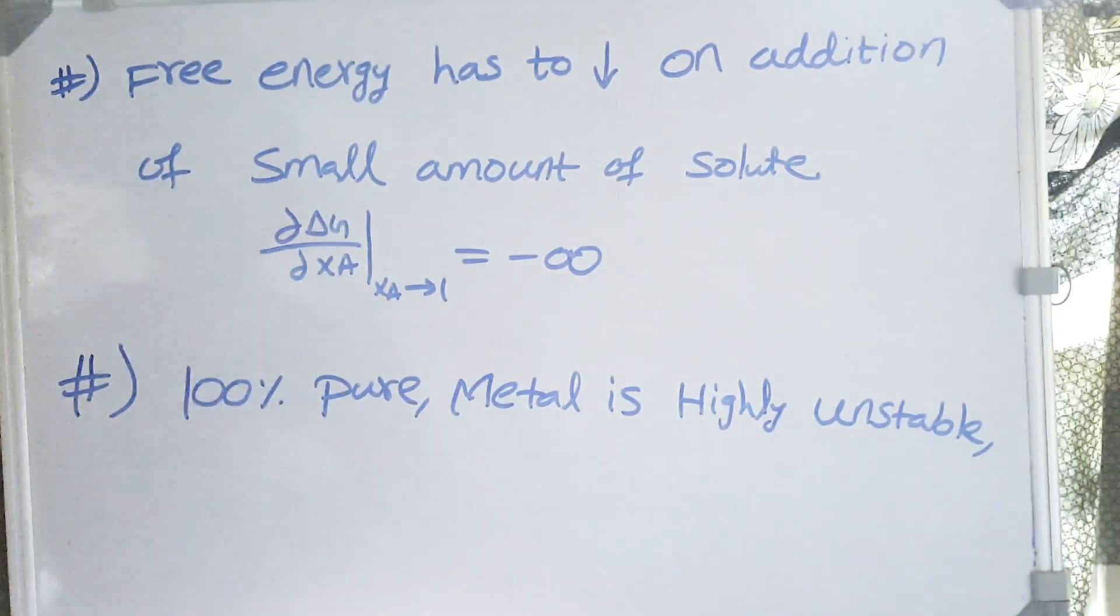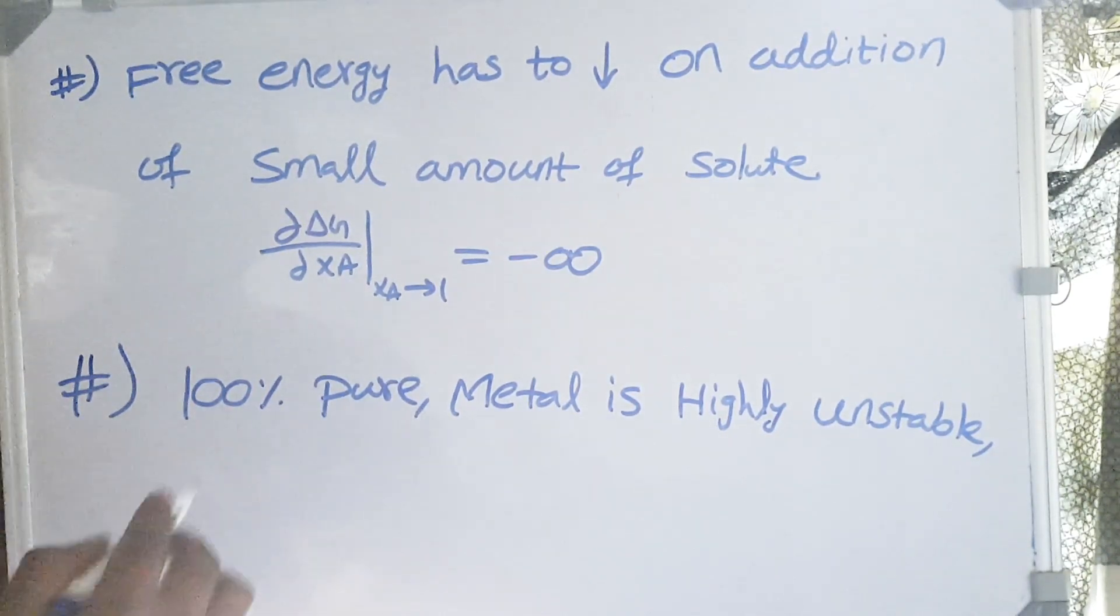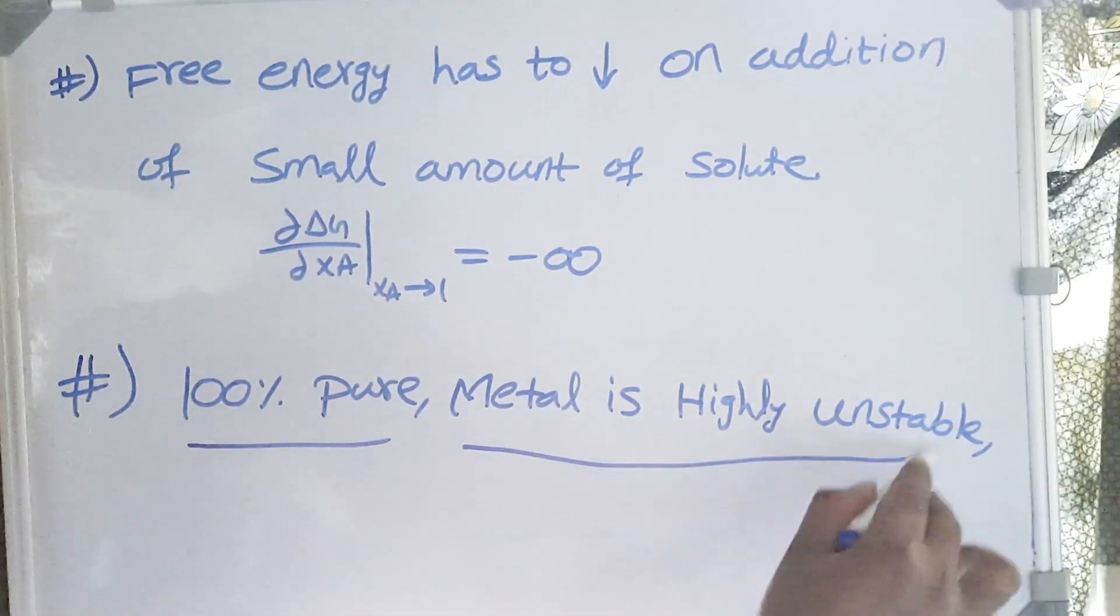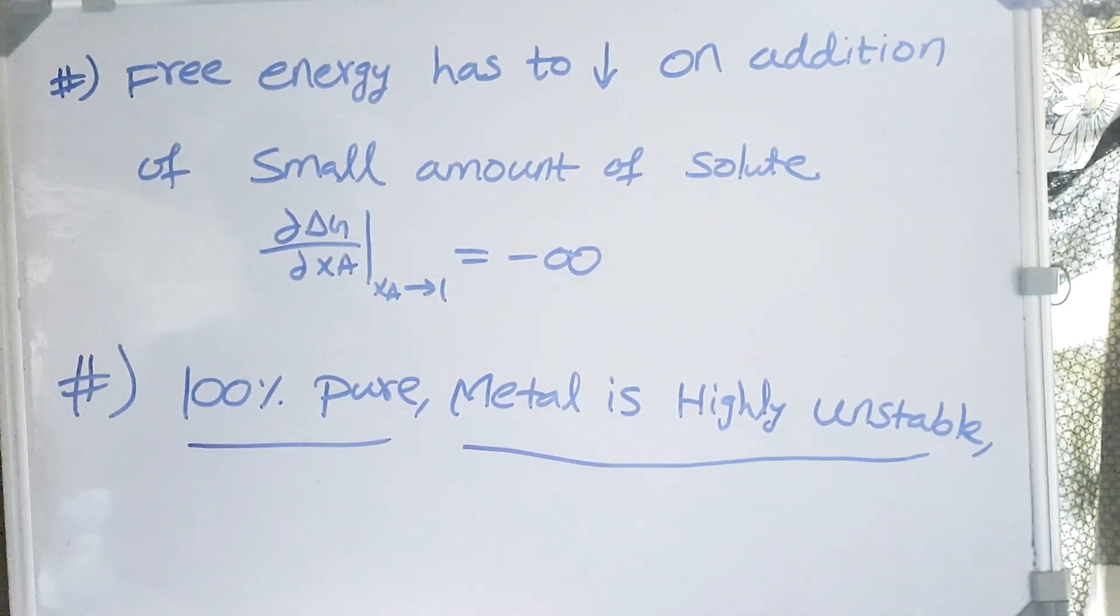So we understood that free energy has to decrease on addition of small amount of solute atoms because it highly reduces the free energy of the system. 100% pure metal is highly unstable. Even if we are able to produce small amount, it is easily going to get contaminated because its free energy is largely reduced by introduction of any contaminants. So I hope you understood the concept. Thank you so much for watching. Have a nice day.